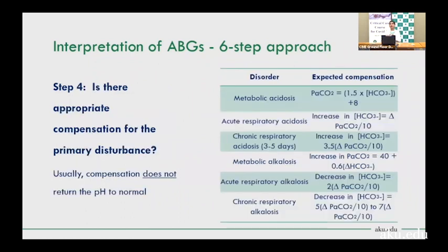In metabolic acidosis, the body compensates by decreasing PCO2 — calculate expected PCO2 using formulas to see if compensation is adequate. Remember: the body never completely normalizes pH through compensation alone; it will approach but not reach normal. These formulas are available in textbooks, online, and in the presentation.